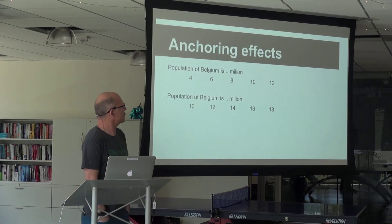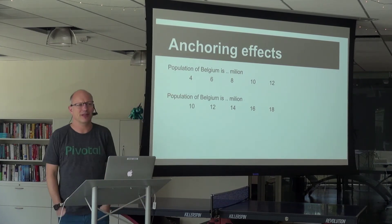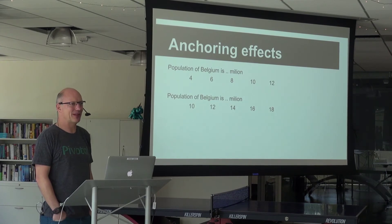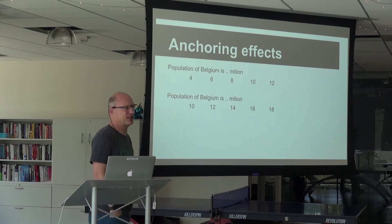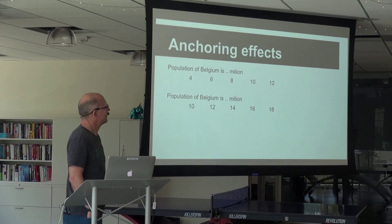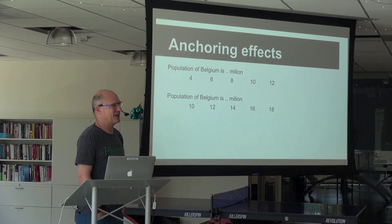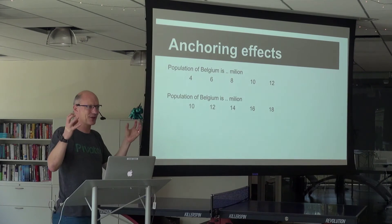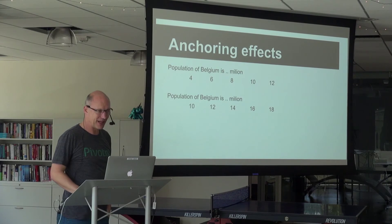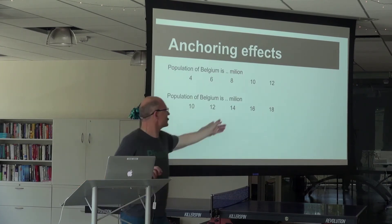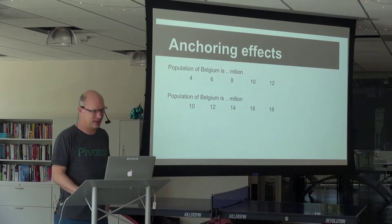Imagine half of you get the top question and half get the bottom question. The population of Belgium is going to vary quite a bit between the two groups, because basically nobody has a clue about the population of Belgium. People look at the scale and find their answer somewhere near the middle — the scale anchors their idea of a reasonable guess. In this version you get a bunch of 8s; in the other version, a bunch of 14s. The actual population is 11.4 million.